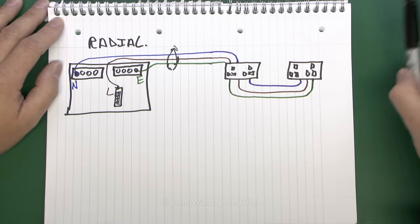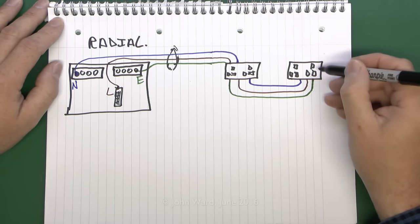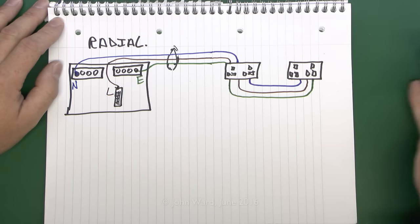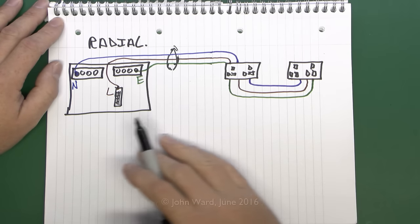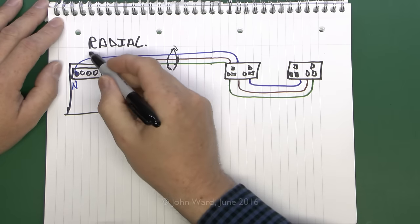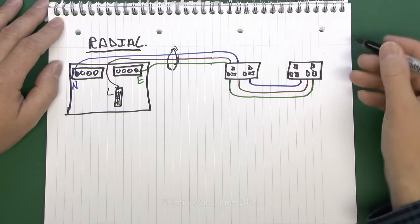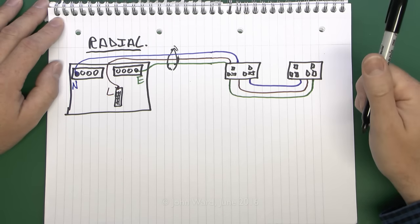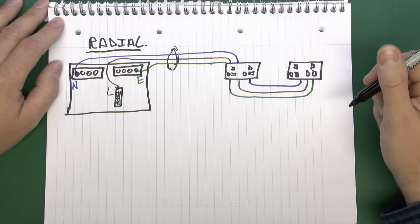The important thing to note is that when you get to the end of the circuit — say this one here — that's pretty much it. There's nothing else to do, as the radial circuit starts here at the consumer unit and it ends at whatever's at the end of the circuit over here, so another socket in this case.